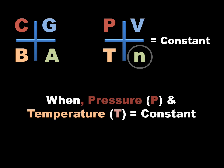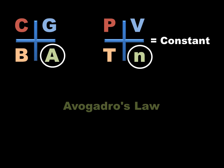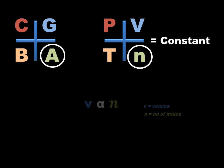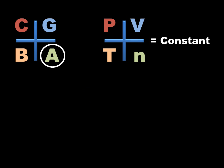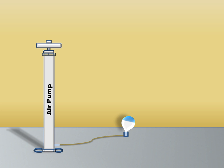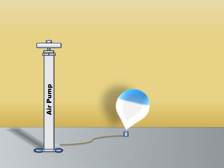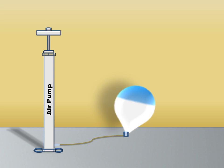When pressure P and temperature T are constant, this process is governed by Avogadro's Law. V is directly proportional to N, and the equation is V1 by N1 equals V2 by N2. Example: swelling of a balloon using an air pump — when pumping, the volume of the balloon increases along with the number of moles inside.